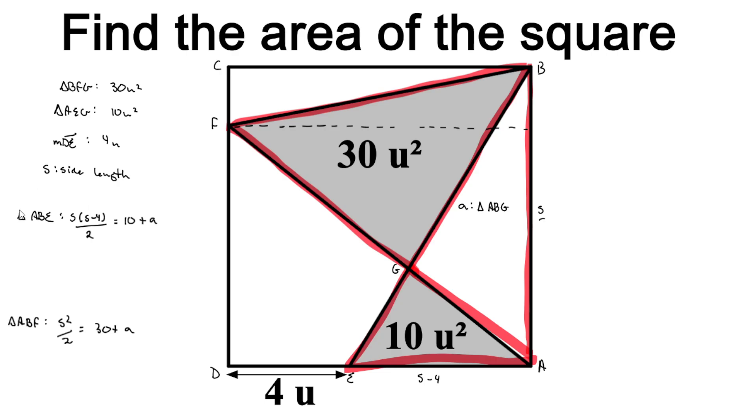So now we have built a system of equations. We have our first equation here and our second equation here, where S represents the side length of our square and A represents the area of triangle ABG. Now since we want to find the side length of our square, I'll isolate A for both our equations.